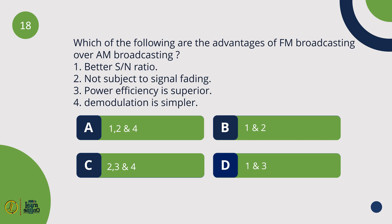Which of the following are the advantages of FM broadcasting over AM broadcasting? Better signal-to-noise ratio and not subject to signal fading. The correct options are 1 and 2.